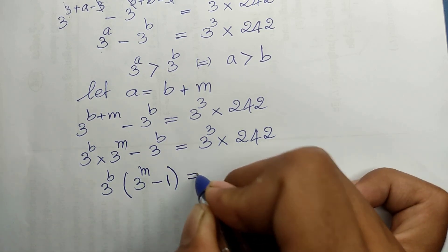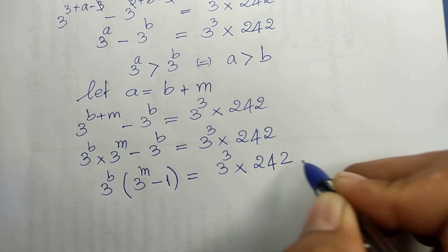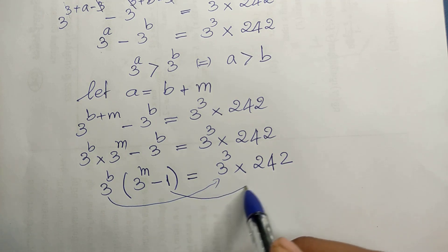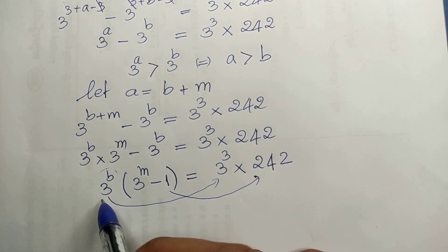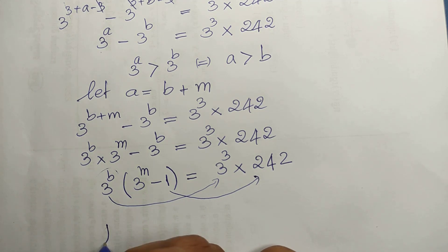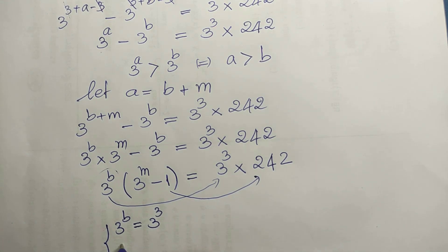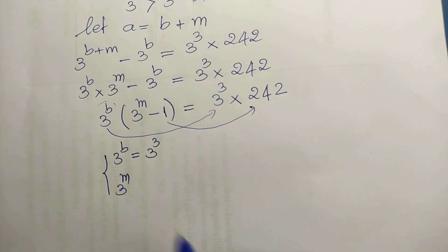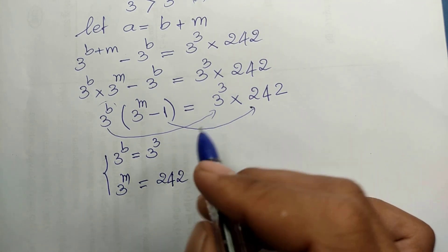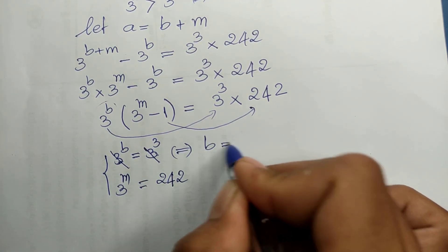We factor out 3^b: 3^b × (3^m - 1) equals 3^3 × 242. We can match the two parts because one side has odd numbers and the other even numbers. So 3^b equals 3^3, and 3^m - 1 equals 242.